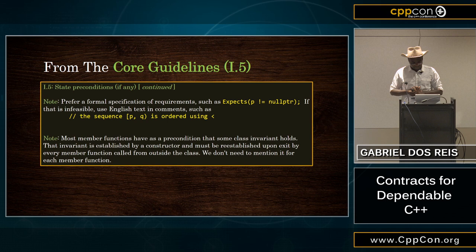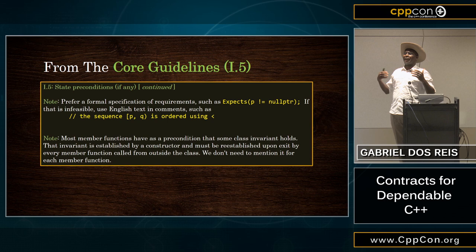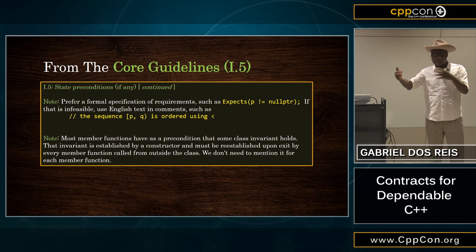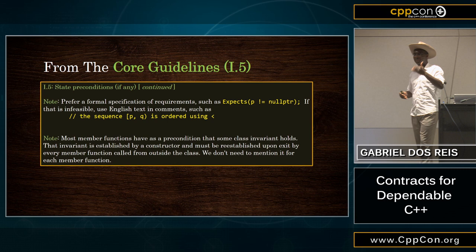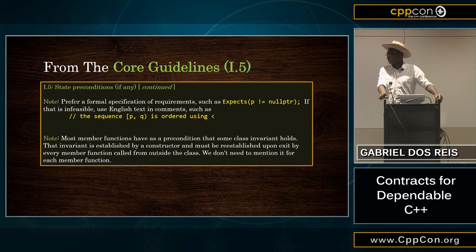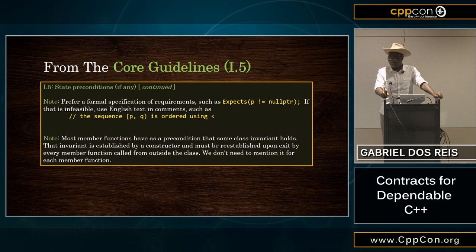When you have a class, after construction, the constructors set up invariants — the environment for all member functions to operate. The invariants set up after construction are also preconditions for every member function you want to call, because you have to have an object of that type before you can make a call. We don't have to repeat that because that's what types are for. Classes are there to capture that kind of invariance, and the tools can use them to verify what's going on.